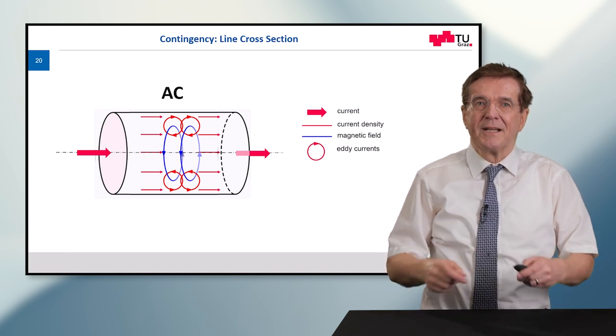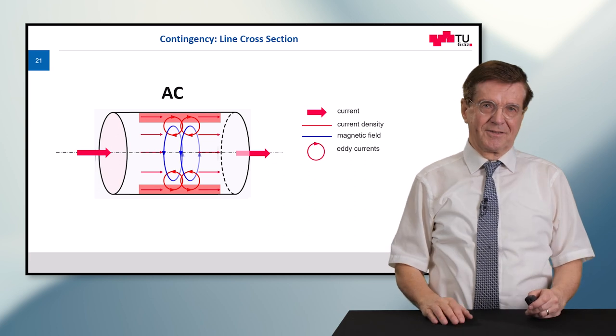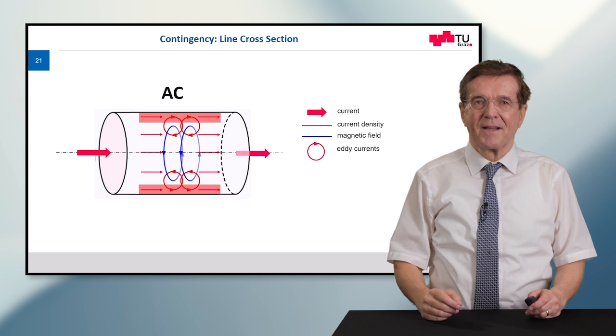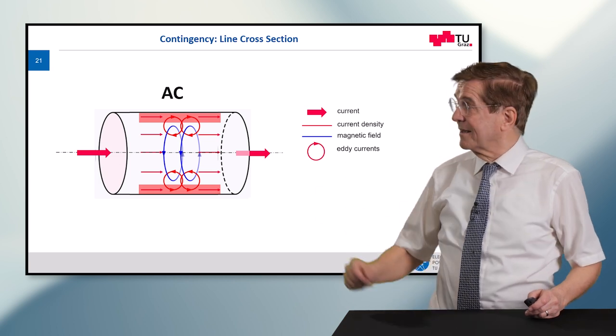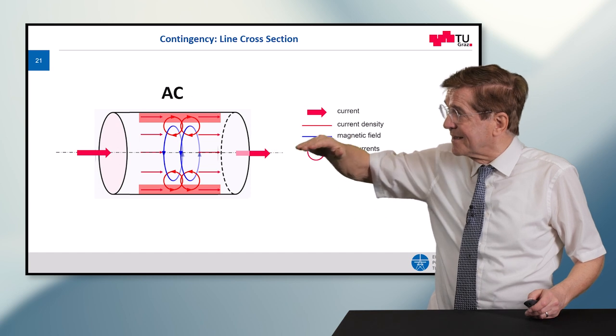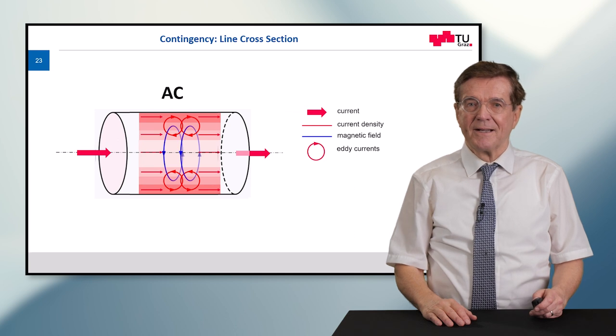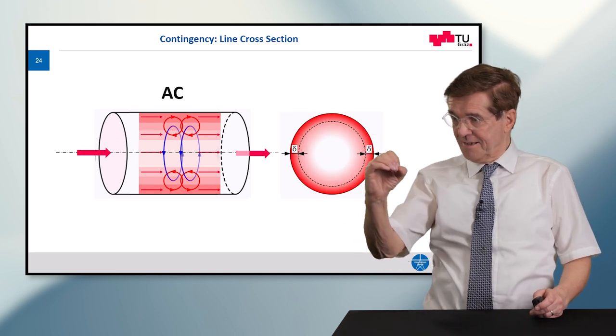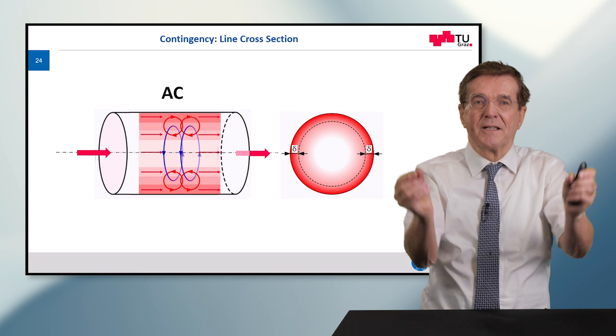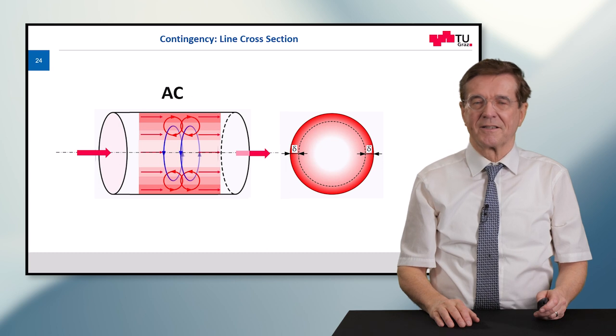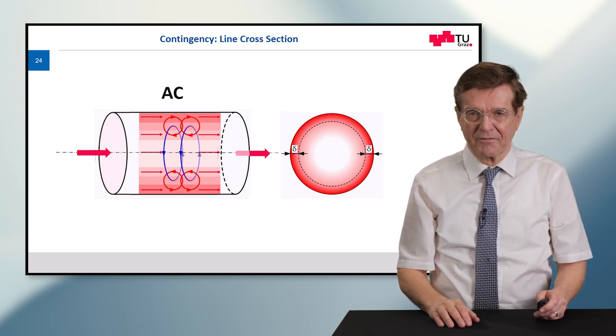While this happens we generate a lot of eddy currents. These eddy currents are circling these magnetic lines and look at the outer fringe of this cable. There these eddy currents are in the same direction as the original current whereas at the center they are opposed and weaken the current density. When we look from the side into the cable the current is flowing only at the outer fringes, at the skin. Therefore this is called the skin effect.